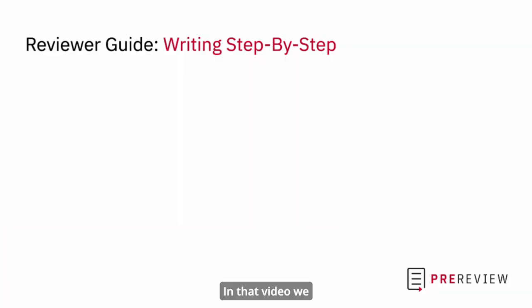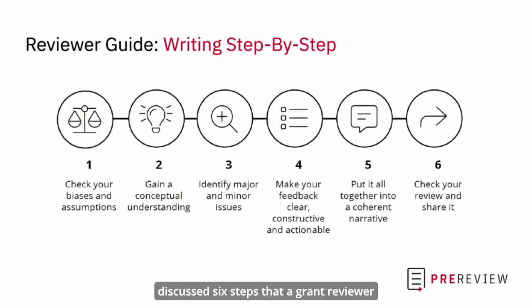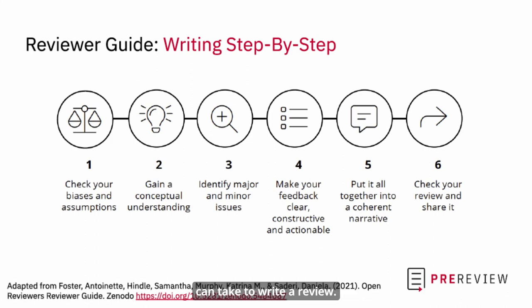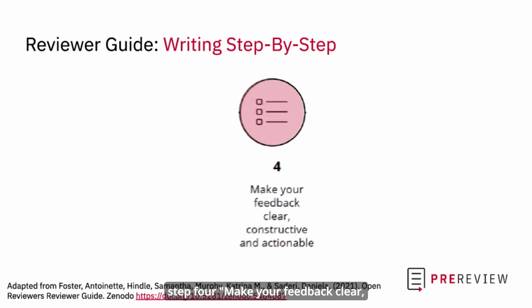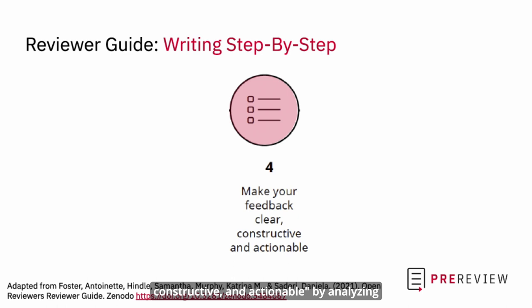In that video, we discussed six steps that a grant reviewer can take to write a review. In this video, we are delving a bit deeper into step four — make your feedback clear, constructive and actionable — by analyzing and reflecting on some examples.